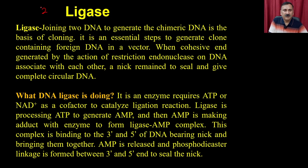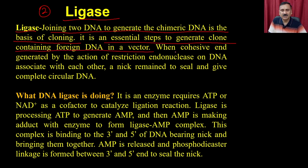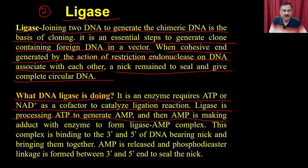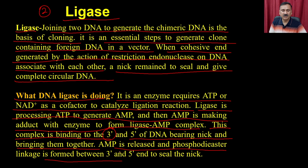The second enzyme is ligase. Joining two DNA fragments to generate chimeric DNA is the basis of cloning. When cohesive ends generated by restriction endonucleases associate with each other, a nick remains to be sealed to give complete circular DNA. DNA ligase requires ATP or NAD+ as a cofactor. Ligase processes ATP to generate AMP, which forms an adduct with the enzyme to create the ligase-AMP complex. This complex binds the 3-prime and 5-prime DNA ends bearing nicks, AMP is released, and a phosphodiester linkage is formed to seal the nick.